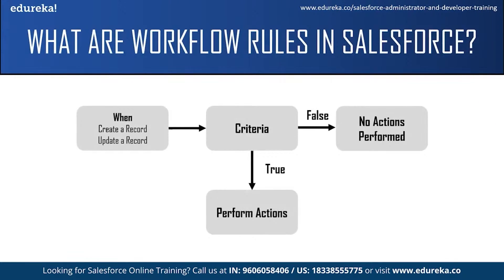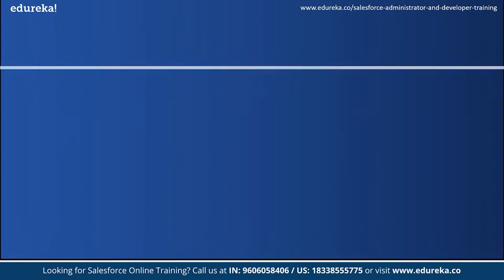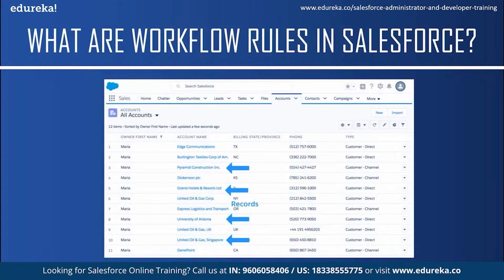Each workflow rule consists of two main things: criteria and actions. You can set a criteria when a record has been created or when it has been updated, and these records are based on a single object. Objects in Salesforce are like leads, accounts, opportunities, contacts, or any other custom object. Fields are the columns in the table that tell us what is stored in the records, and records are the rows or any entry in the table — basically the information of an individual.